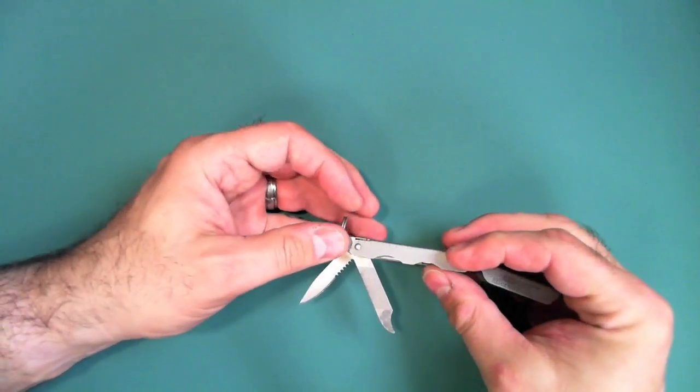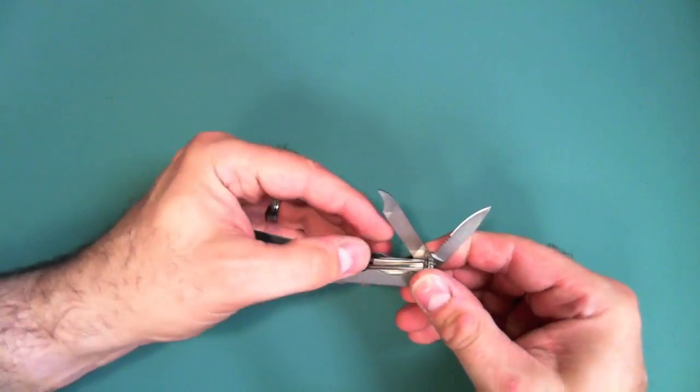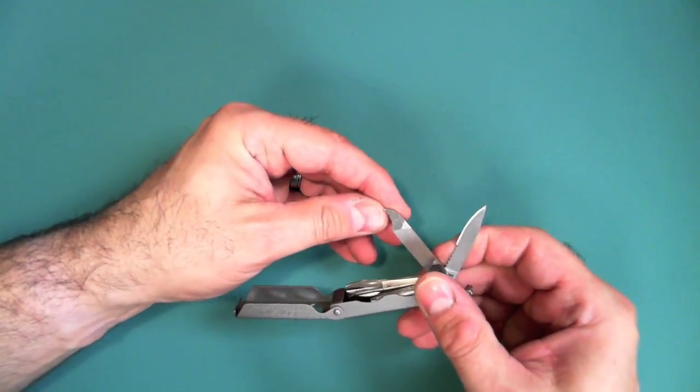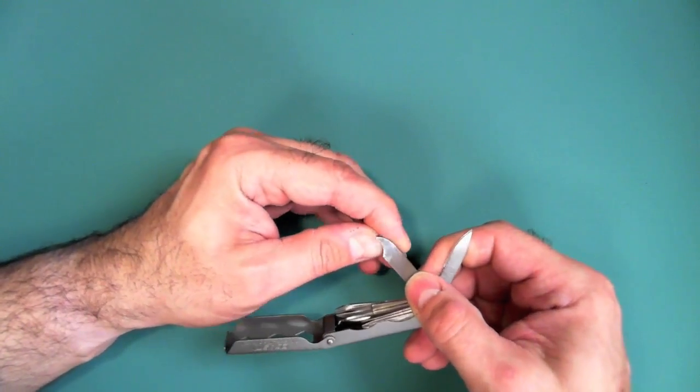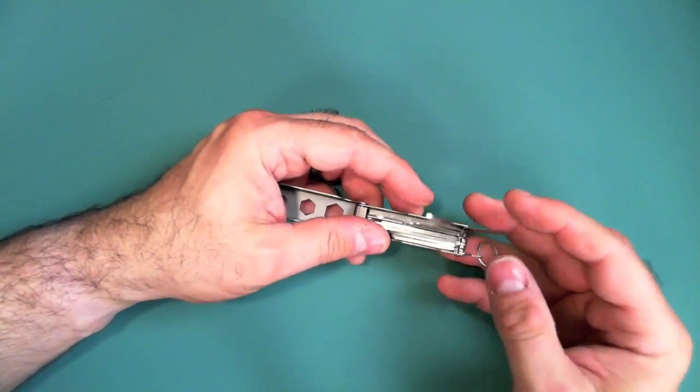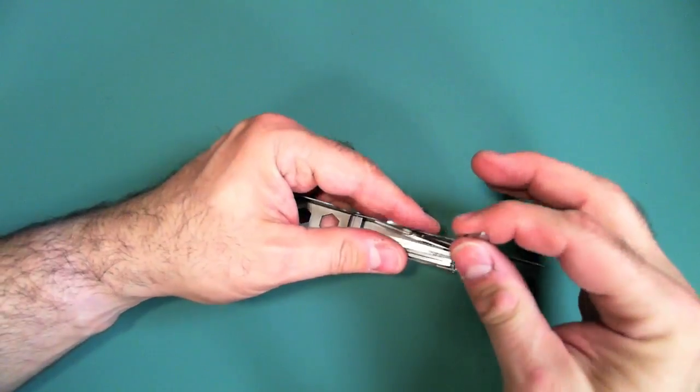And let's look at some of the other tools. The next tool here is a file. So, you have a file. So, you can take care of your manicure needs. And you also have a fingernail picker right there. Which I definitely need to use.